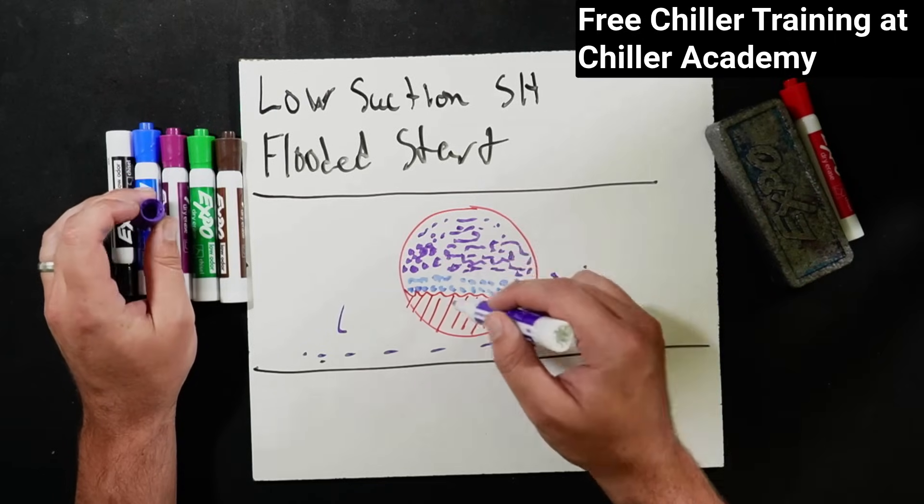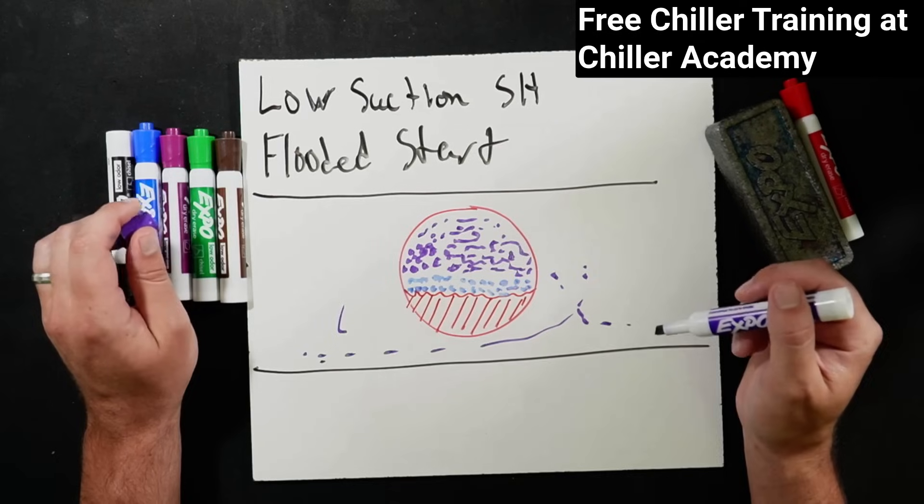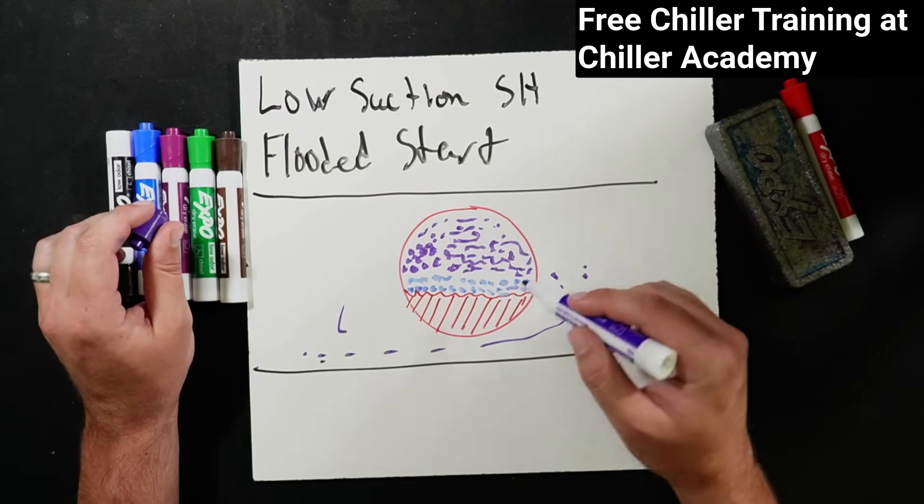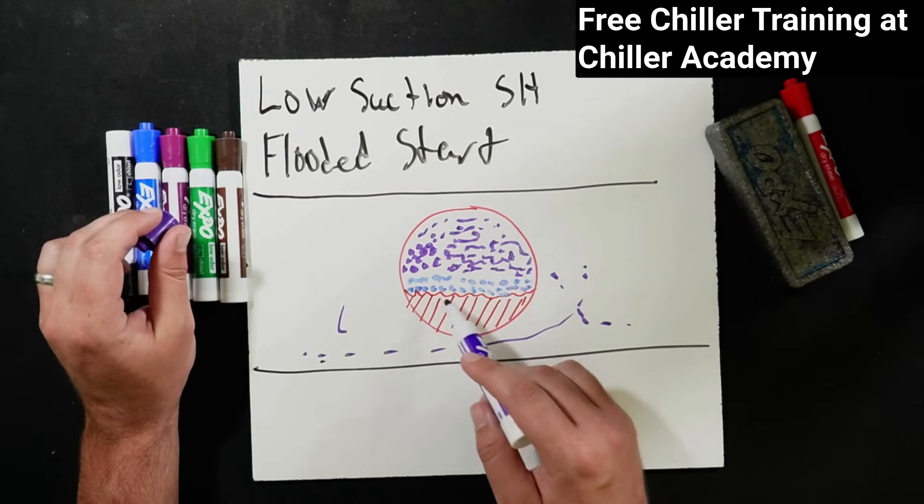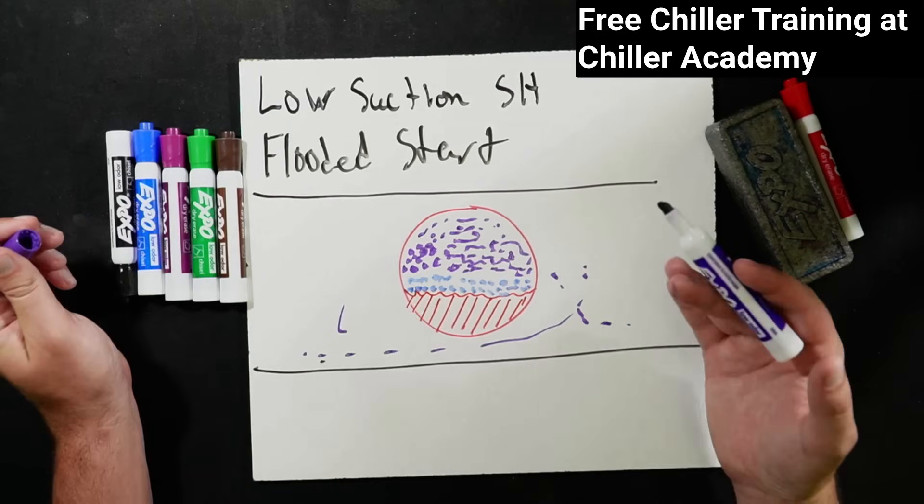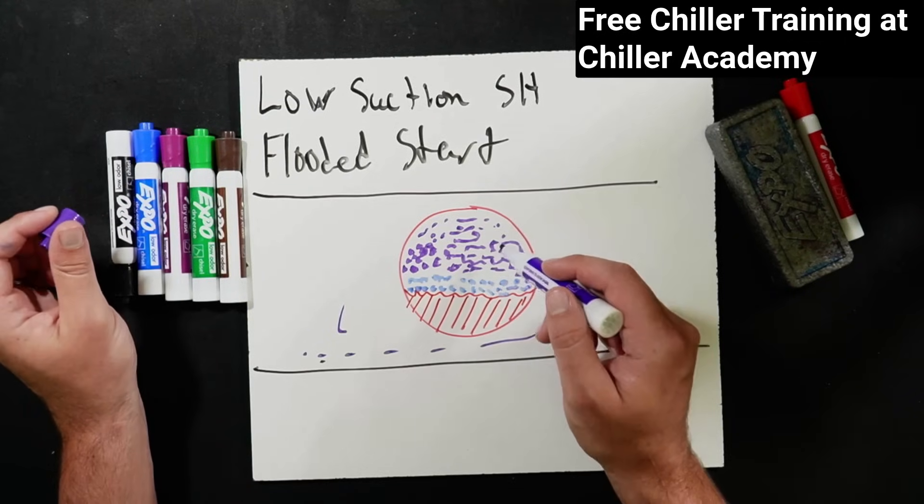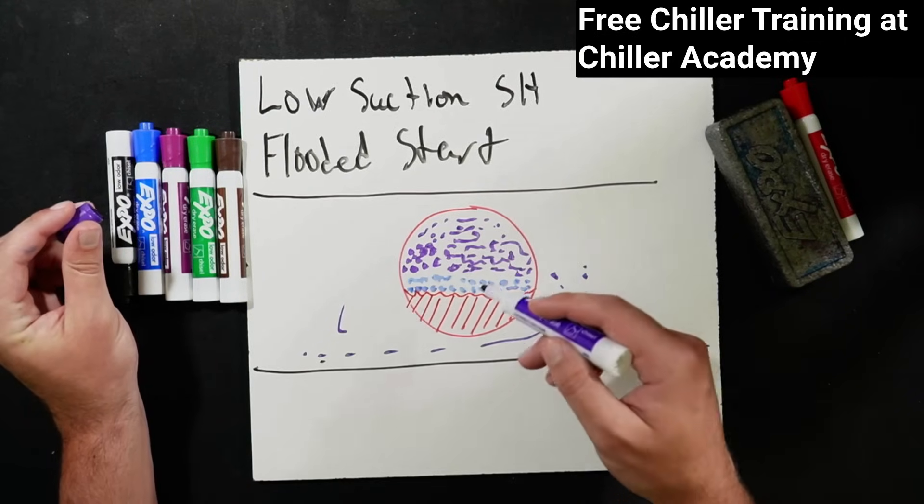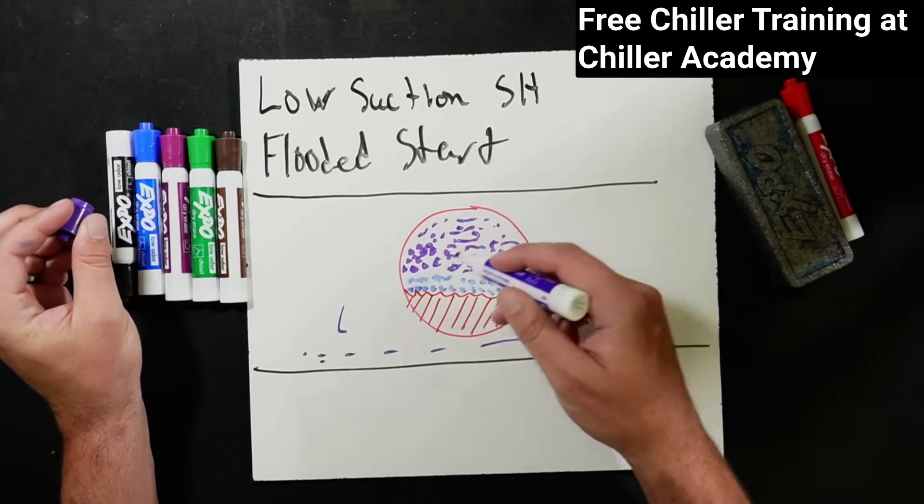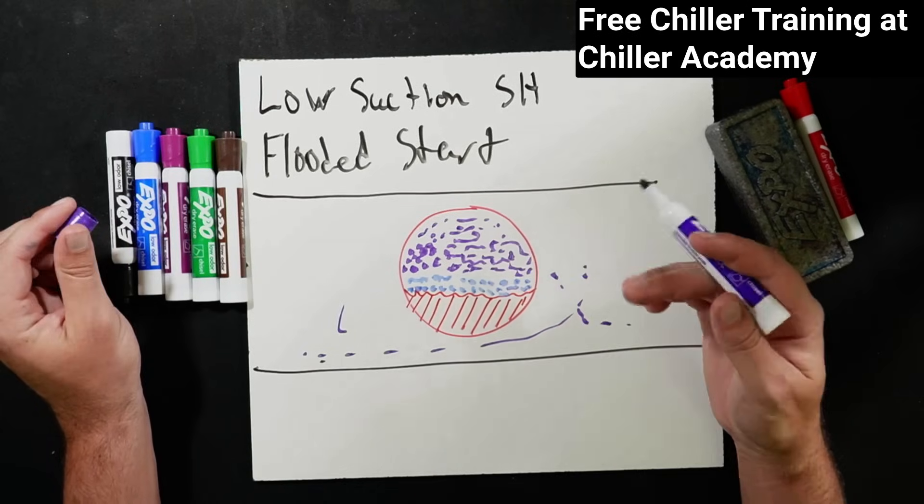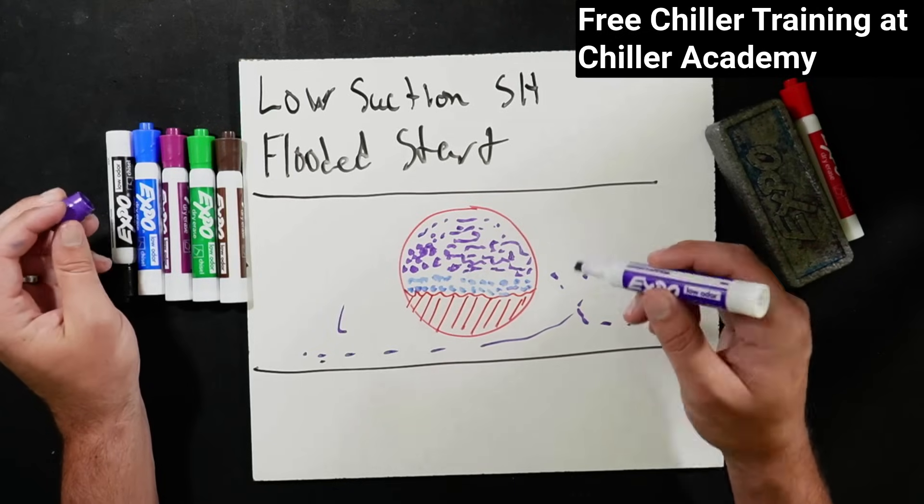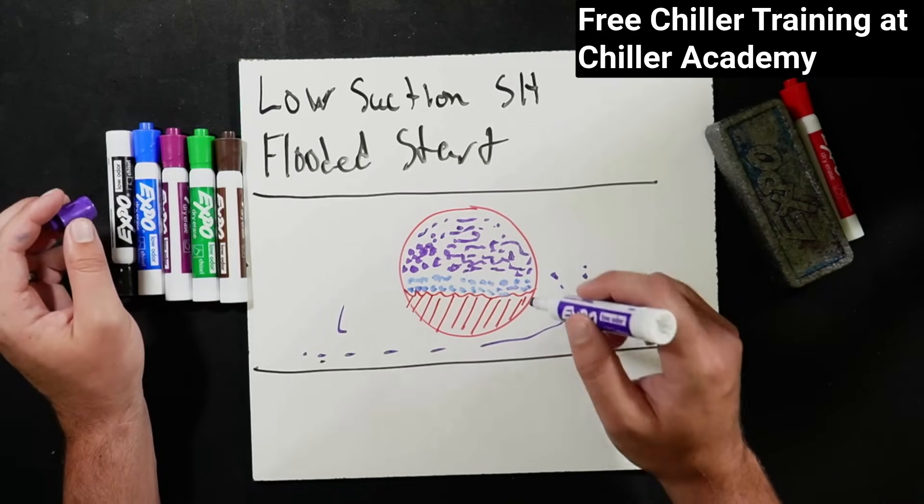Issue number two, you're going to have a major foaming right out the gate. So as soon as that compressor turns on, it's not abnormal to have a little bit happen. What is abnormal is the first several minutes or your sight glass immediately turns to straight heavy foaming. As soon as that compressor cranks up, that is not okay. That is not normal.